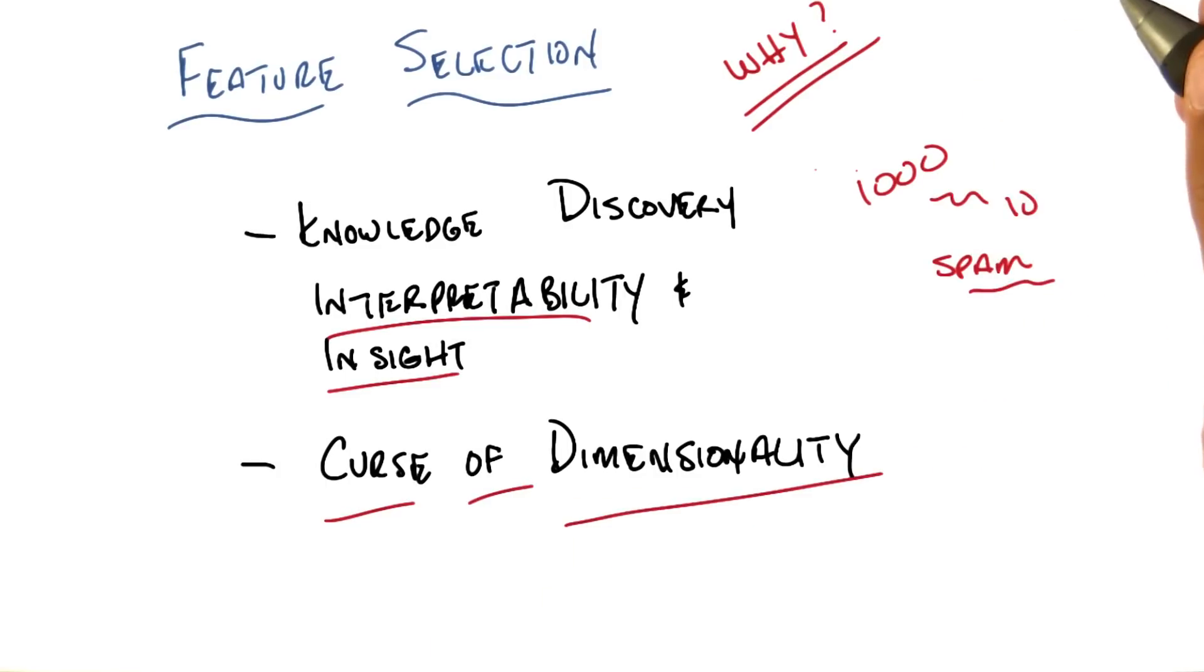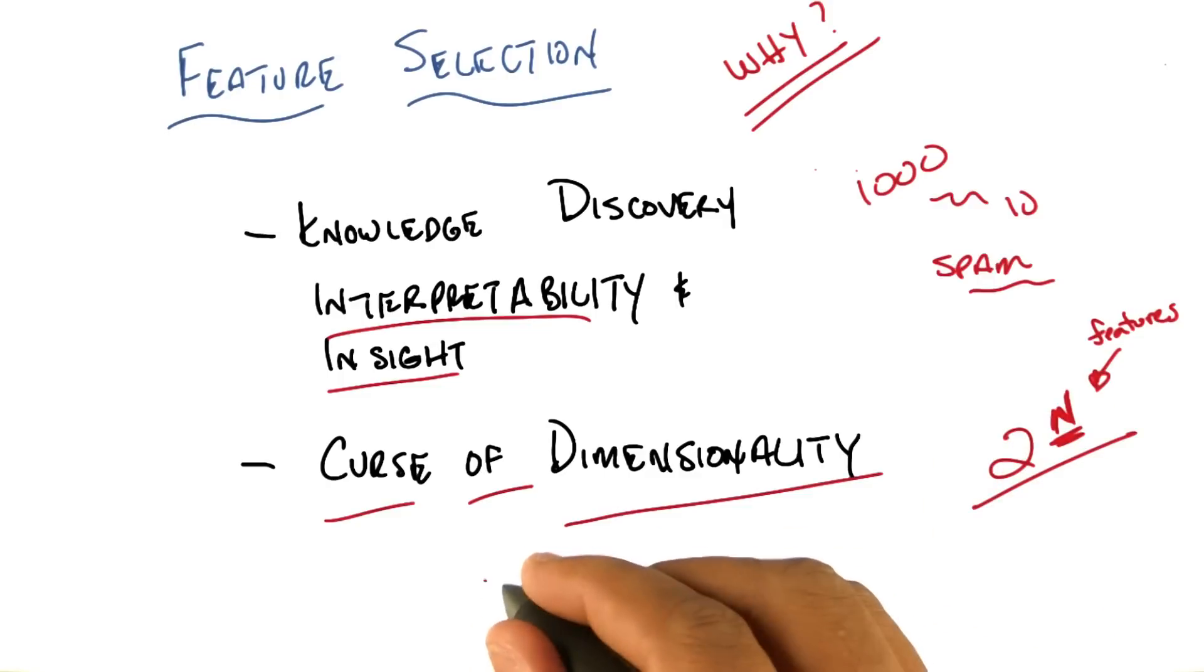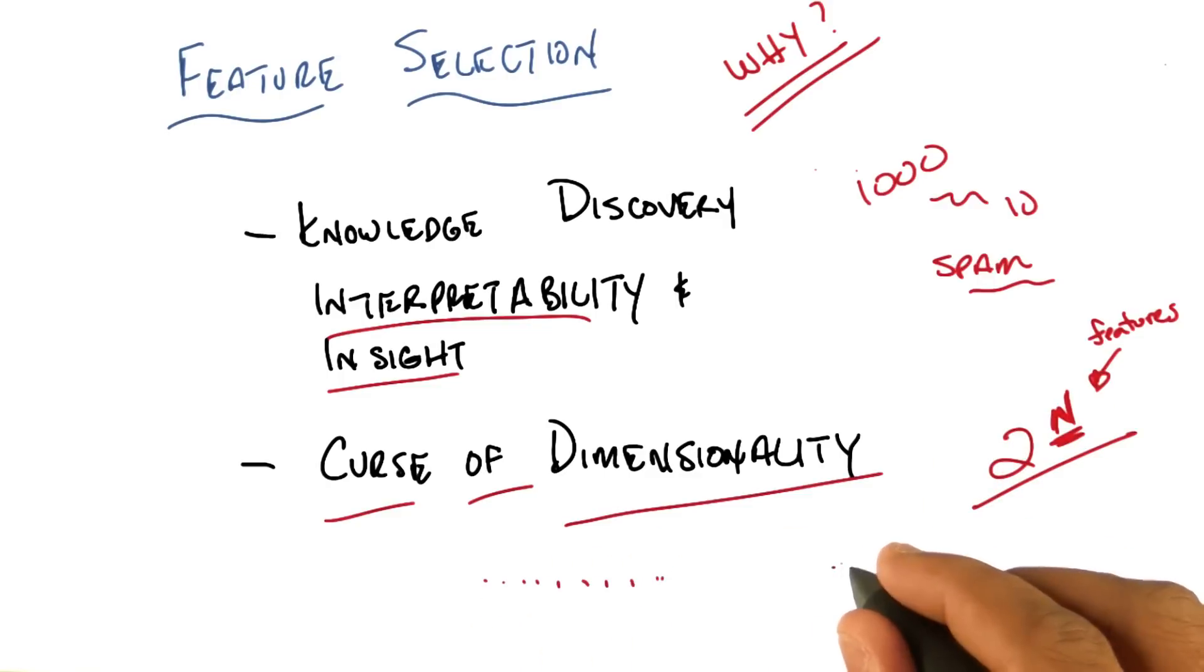So do you remember what the curse of dimensionality is, Michael? Yeah. As you add more features, you may need exponentially more data to kind of fill out the space. The curse of dimensionality says that the amount of data that you need grows exponentially in the number of features that you have. So it'd be really nice if you could have fewer features. So the problem of feature selection helps us hopefully, at least in a nice world, to go from a whole bunch of features to just a few features, thus making the learning problem actually easier.